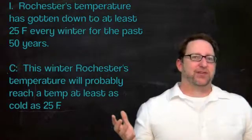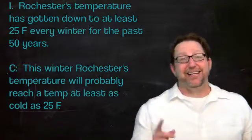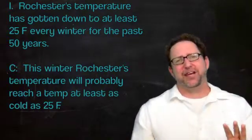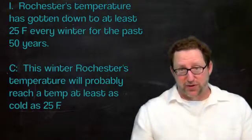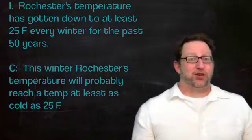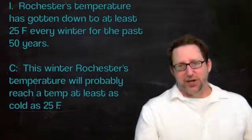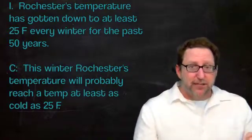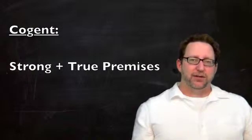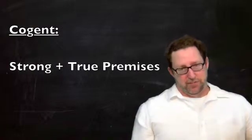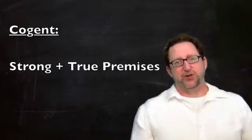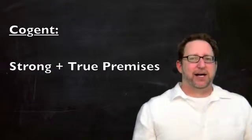Now all that remains is for us to ask whether the premise is true. And in this case, it is true. It is indeed true that for the last 50 years, the temperature has always gotten down at least as low as 25 degrees Fahrenheit. And for those of you who live in the Rochester area, you know that it usually gets much colder than that. So what we have here with our inductive argument is a strong inductive argument that's also cogent. Remember, a cogent argument is one that's strong and also has true premises. Well, this is an argument that's put together in such a way that the conclusion does indeed follow from the premise. The premise is true. So what we have here is a really good inductive argument.